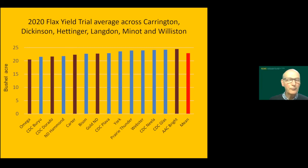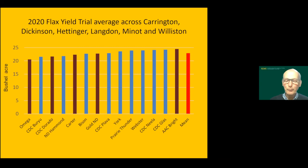When doing variety selection, you need to select within seed coat class — if you're looking at yellow varieties compare those among themselves, and if you're comparing brown varieties, those are the blue bars.